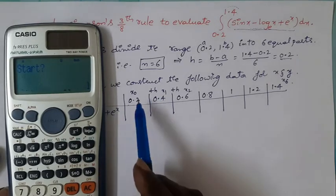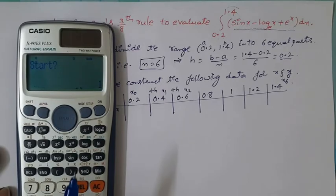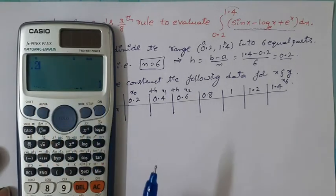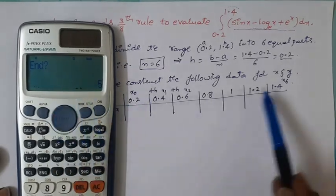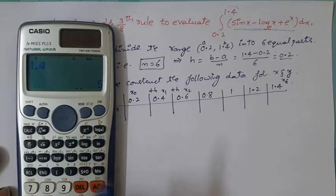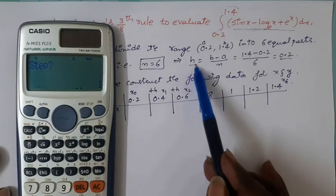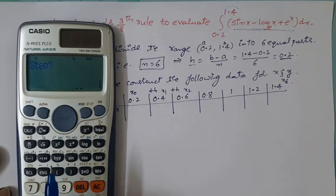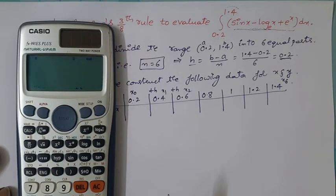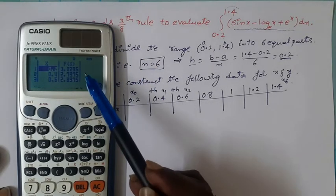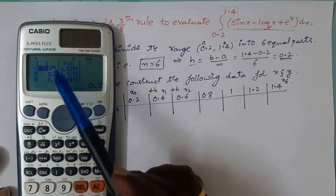It is asking what is the starting value. The starting value of x is 0.2, also known as the lower limit. So operate 0.2 now, and again equals. What is the ending value of x? 1.4. 1.4 equals. What is the step? Step is the step size, otherwise interval difference, which is also 0.2 here.